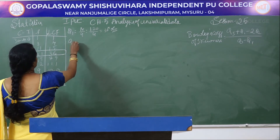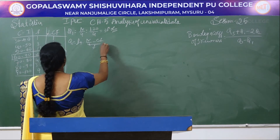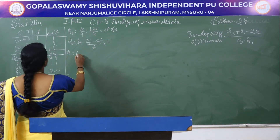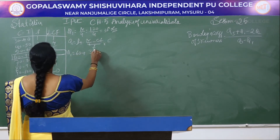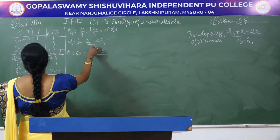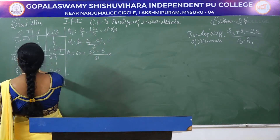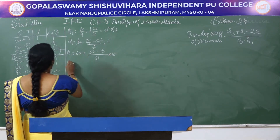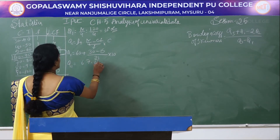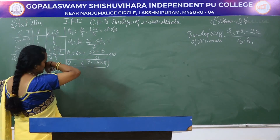To find Q1, the formula is L plus (N/4 minus CF) divided by F, into C. Q1 equals 60 plus (30 minus 15) divided by 21, into 10. The Q1 value is 67.1428.